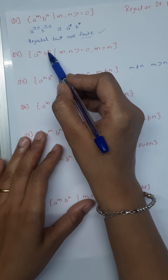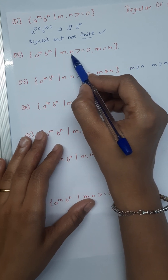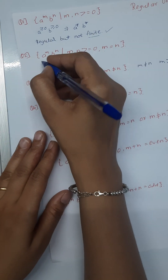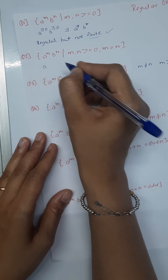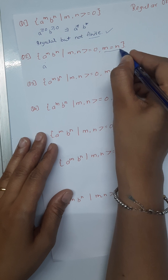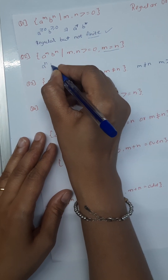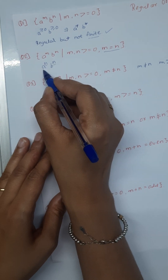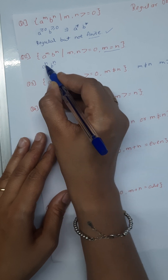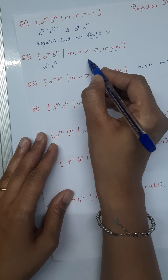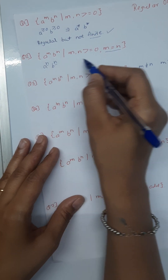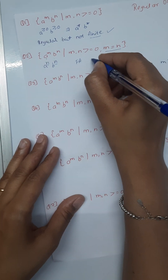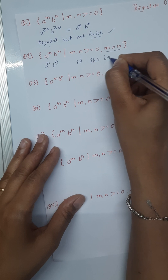The second example: a raised to m, b raised to n, where m and n are greater than or equal to 0, and m equals n. In this case we can write this as a^n b^n. In this expression, a and b require the same amount of memory. A regular expression is accepted by an FA, and FA does not have enough memory to store a^n and b^n. This is the reason this language is not regular.